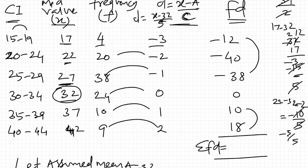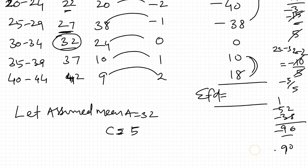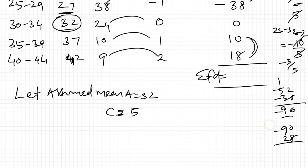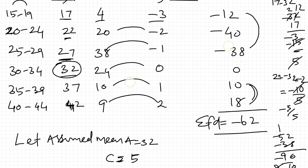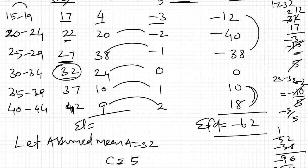Adding these: minus 12, minus 40, minus 38, that's minus 90. Plus 0, plus 10, plus 18, that's plus 28. So minus 90 plus 28... 10 minus 8 is 2, 8 minus 2 is 6, that is minus 62. Now sigma F, adding all frequencies, is 105.